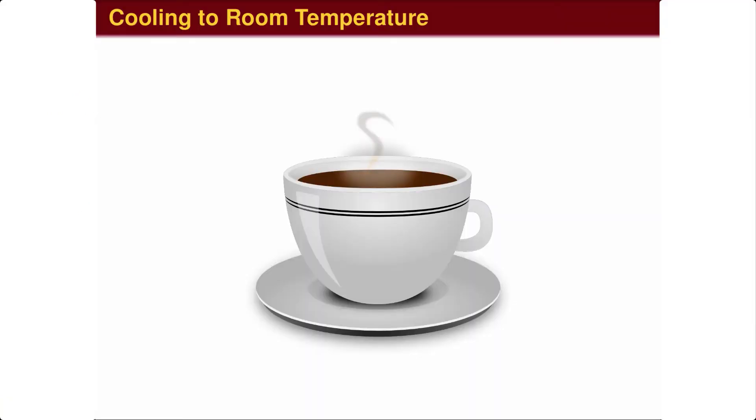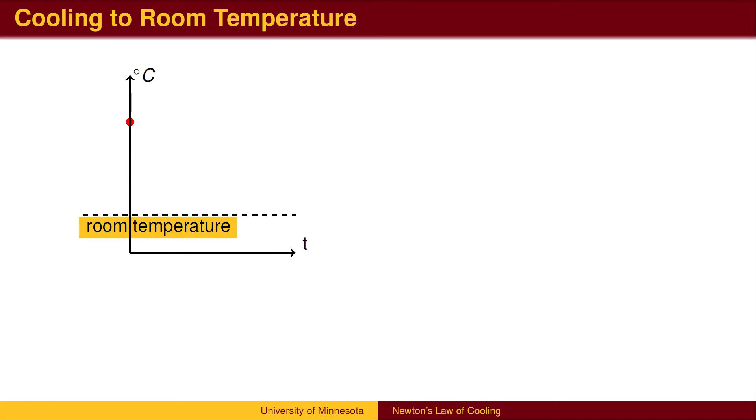Newton's Law of Cooling states that the temperature of a heated object, like a cup of coffee, exponentially decays to the temperature of its surroundings, typically called room temperature. Suppose room temperature is 20 degrees Celsius, and initially the coffee is 80 degrees Celsius. As time passes, the excess heat in the coffee dissipates into the surrounding air.